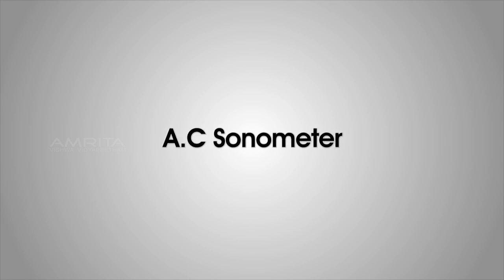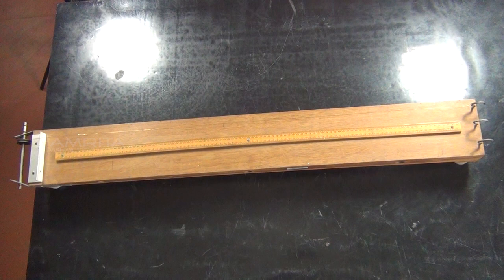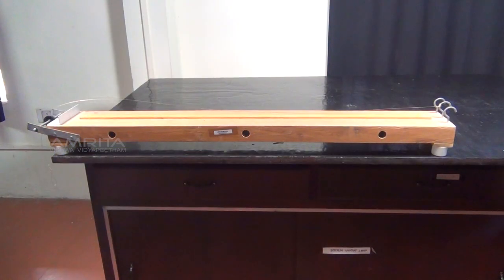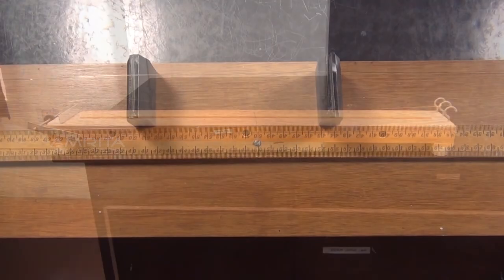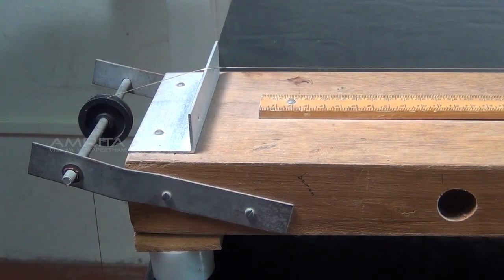AC Sonometer. The sonometer is an apparatus used to study the transverse vibrations of stretched string. It is a hollow wooden rectangular box with two bridges and a pulley at one end.